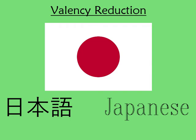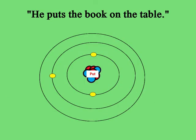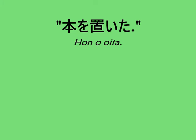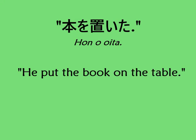What about valency reduction? For a good example, look no further than Japanese. Remember the verb 'put,' which requires a subject, direct object, and prepositional object? In Japanese, the prepositional object is actually optional. For example, in Japanese you can say 'Hon-o-oita,' which literally means 'I put the book' — where you put it can be inferred from context. Japanese is an extremely contextual language, and this is also one of the things that makes it really hard to translate into English.